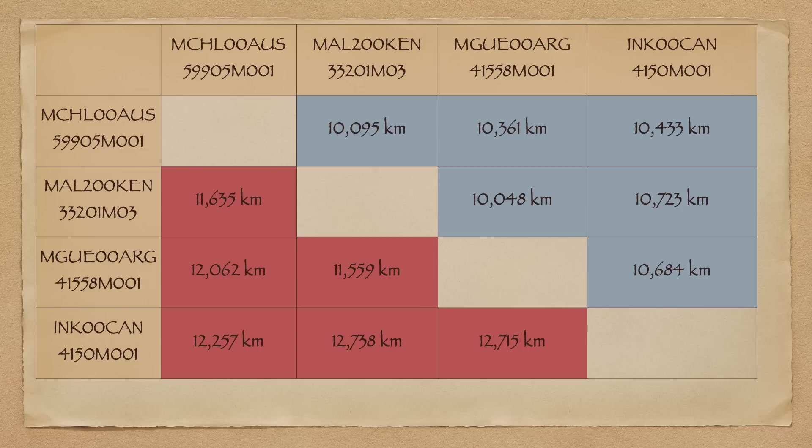We can now directly compare this estimate against the Cartesian distances between the IGS sites. In this table, I present the Cartesian distances between the IGS sites in blue above the diagonal, and the great circle approximations between them below the diagonal in red. The results show that the Cartesian distances between the IGS sites are in good agreement with the estimate we obtained in the last slide.